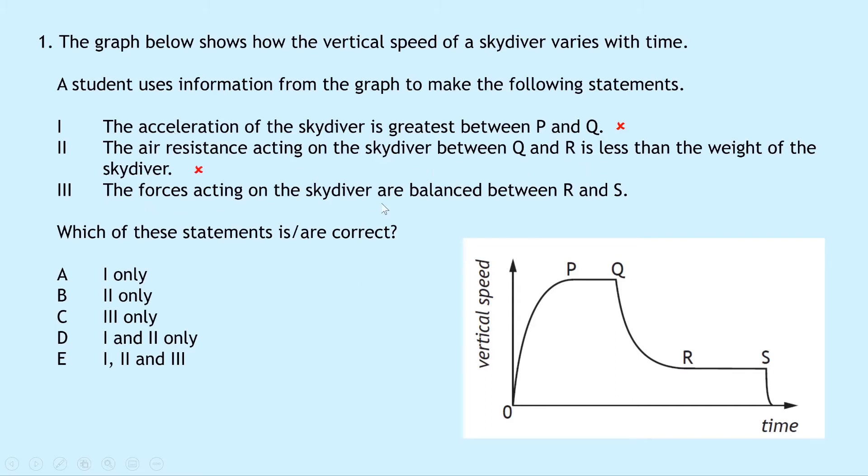And lastly, the forces acting on the skydiver are balanced between R and S. Well, between R and S that is actually going to be our second terminal velocity when the two forces acting on the skydiver are balanced. So this is indeed balanced forces here, so this one is true. This means our answer is three only, which is C.